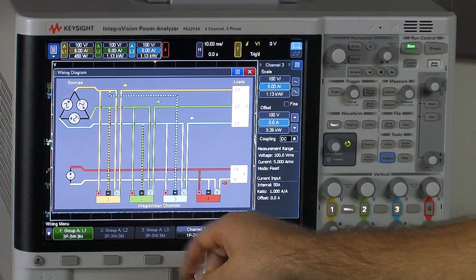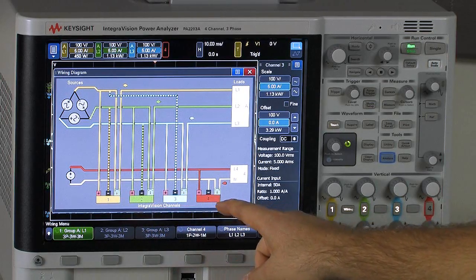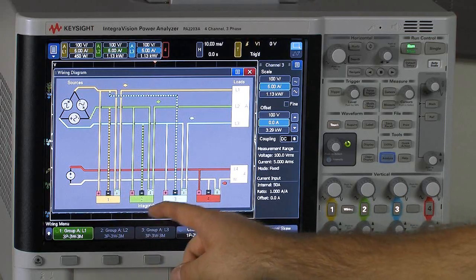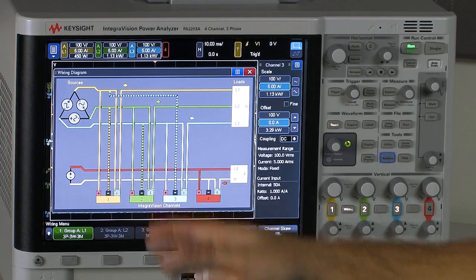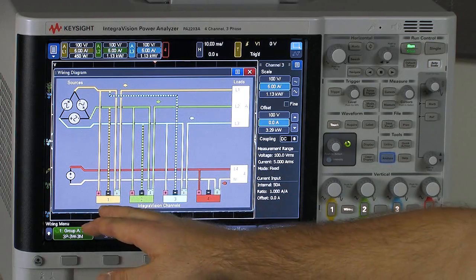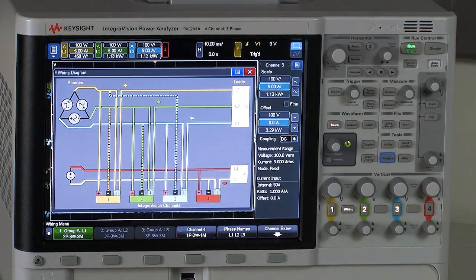The key thing to notice here is that the actual connections to the instrument are along the bottom of the screen. So I have channels one, two, three, and four on the rear panel of the instrument. And so basically the diagram is showing how do I connect up to my voltage and how do I connect up to the current inputs.